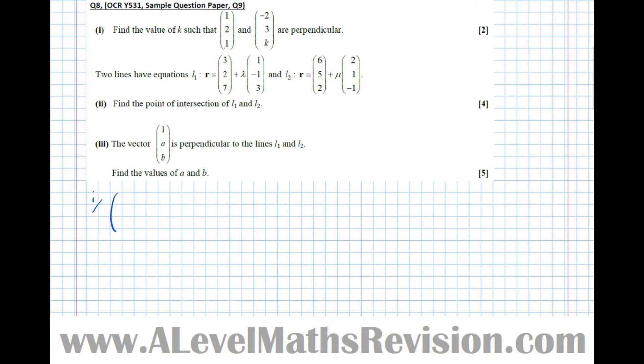If we do that, 1, 2, 1, dot minus 2, 3k equals zero, because they're perpendicular, which means that minus 2 plus 6 plus k equals zero, which means that k equals minus 4. So that's part one done.